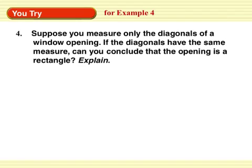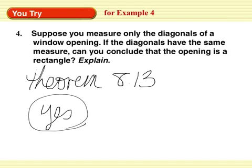You try: suppose you measure only the diagonals of a window opening — if the diagonals have the same measure, can you conclude the opening is a rectangle? Theorem 8.13 states a parallelogram is a rectangle if and only if its diagonals are congruent. So if the diagonals are congruent, then it is a rectangle.